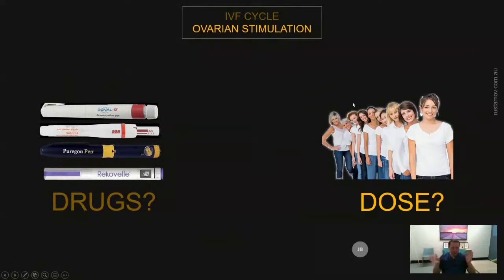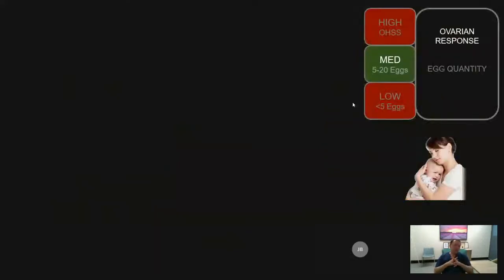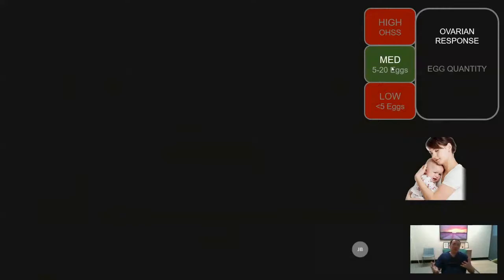Now we have covered drug types for ovarian stimulation, and we move on to dosing. Once we have decided which drug to use, we need to decide what dose to give each patient. Our objective is to achieve optimal ovarian stimulation — getting enough eggs to give the best chance of pregnancy without overstimulating or understimulating. Generally, research suggests approximately 15 eggs gives an optimal chance of pregnancy, though this is achievable in some patients and not others, depending on their ovarian reserve.